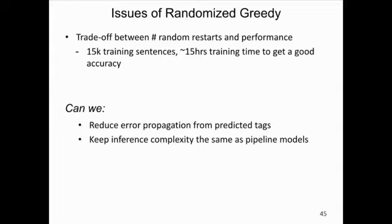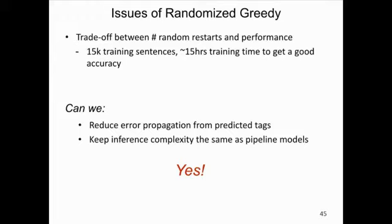Now we have a randomized greedy algorithm that can handle arbitrary scoring functions. However, efficiency is still an issue — there's a trade-off between the number of random restarts and performance. In our case, we need around 15 hours to train with 15,000 sentences. The question is: can we still reduce error propagation from predicted tags while keeping the inference complexity the same as the pipeline model? The answer is yes.